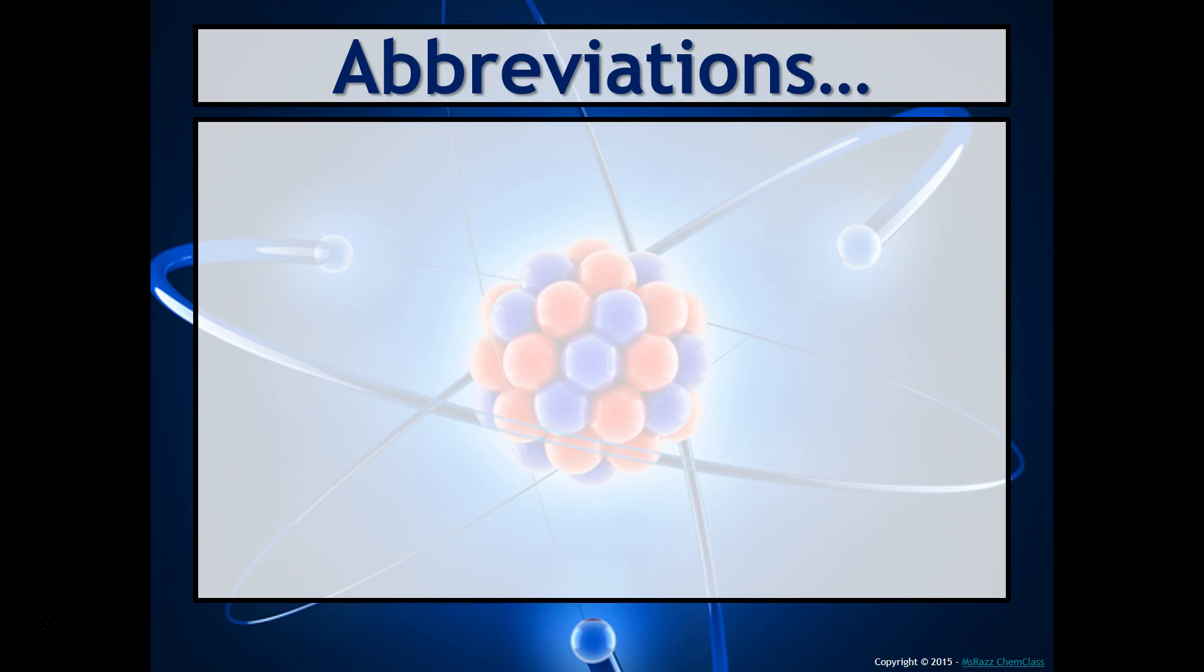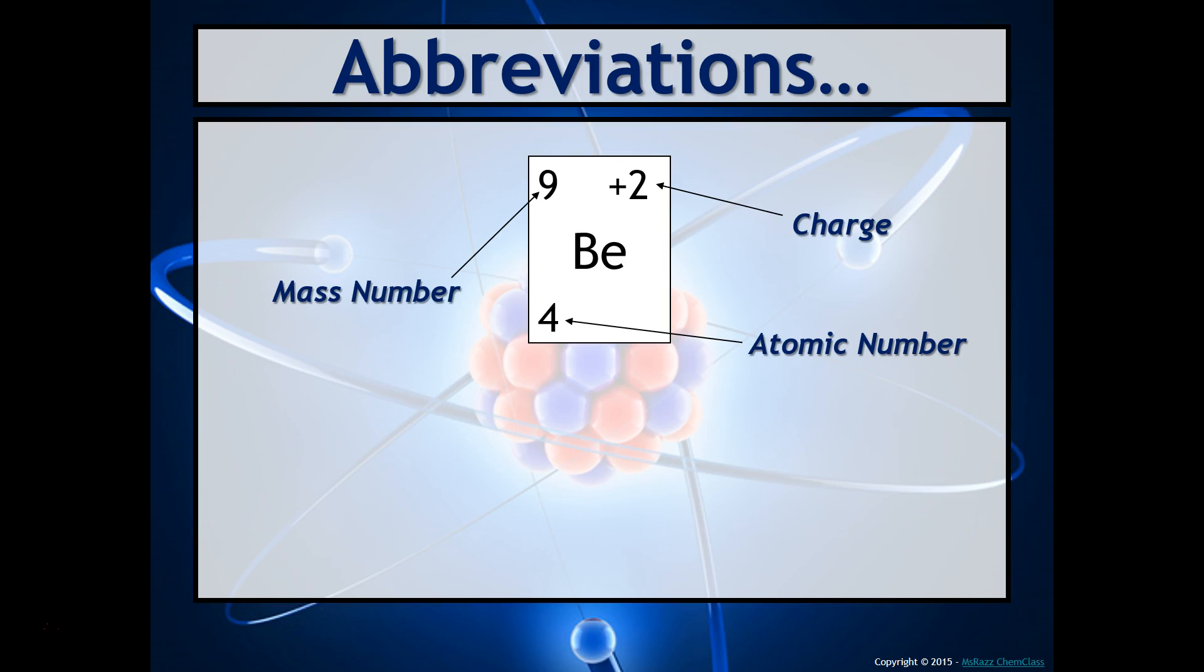Here's a little bit about abbreviations. Typically, whenever you write an abbreviation, in the upper left-hand corner, you are going to have the mass number. In the lower left-hand corner, you will have the atomic number. And in the upper right-hand corner, you will have the charge. Same thing with lithium. It'll be mass number, atomic number, and charge.